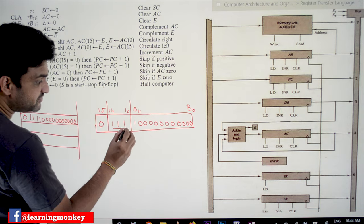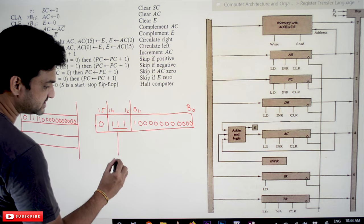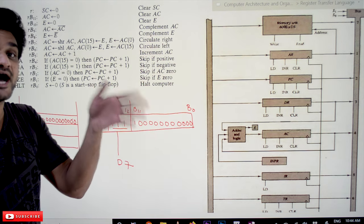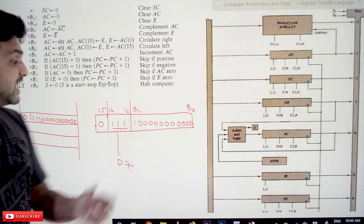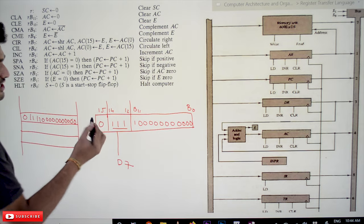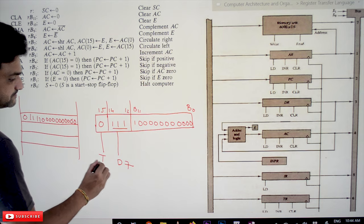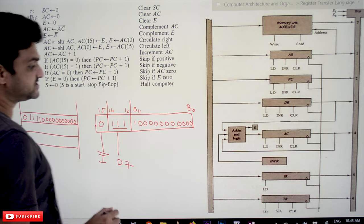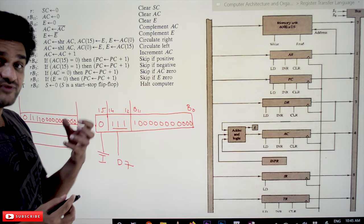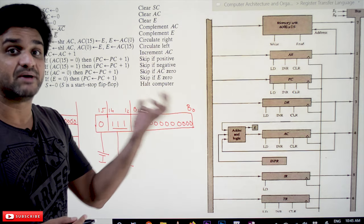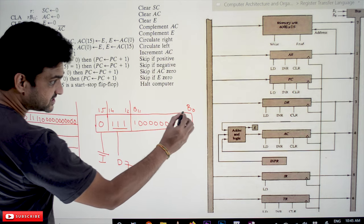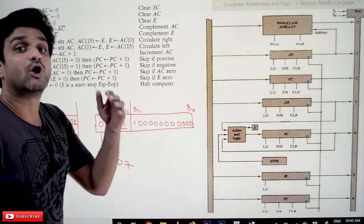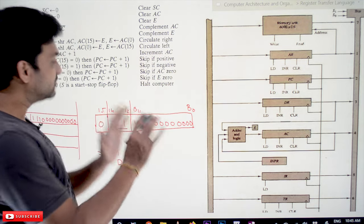Once transferred to the instruction register, this opcode will be decoded. With this opcode, line d7 will get activated. As we have discussed, register reference and IO reference instructions have the same opcode — 111. The only difference is the address mode bit: if the address mode is 0, it is a register reference instruction (i-complement is 1). In register reference instructions there are no memory references — the address bits in the instruction code decide what kind of operation has to be performed.